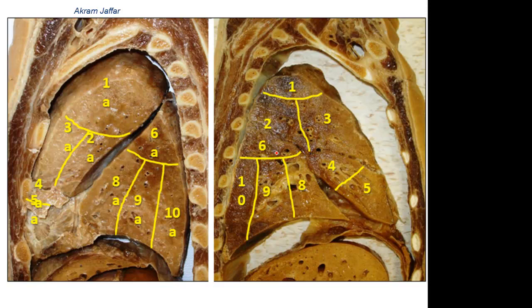In the lower lobe, we have apical basal, anterior basal, posterior basal, lateral basal, and medial basal — which is not shown here because it's located on the opposite side, behind the lateral basal.